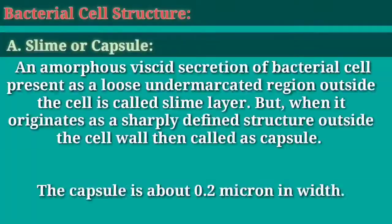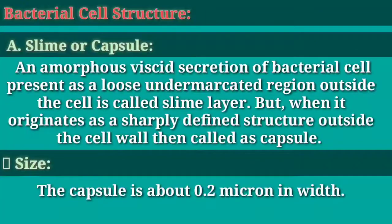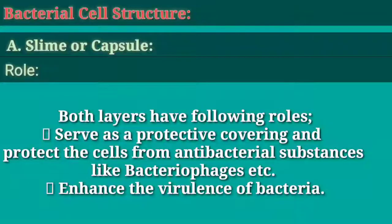A. Slime or capsule. An amorphous viscid secretion of bacterial cell present as a loose, undemarcated region outside the cell is called slime layer. But when it originates as a sharply defined structure outside the cell wall, it is called a capsule. The capsule is about 0.2 micron in width. Both layers serve as a protective covering, protect the cells from antibacterial substances like bacteriophages, and enhance the virulence of bacteria.